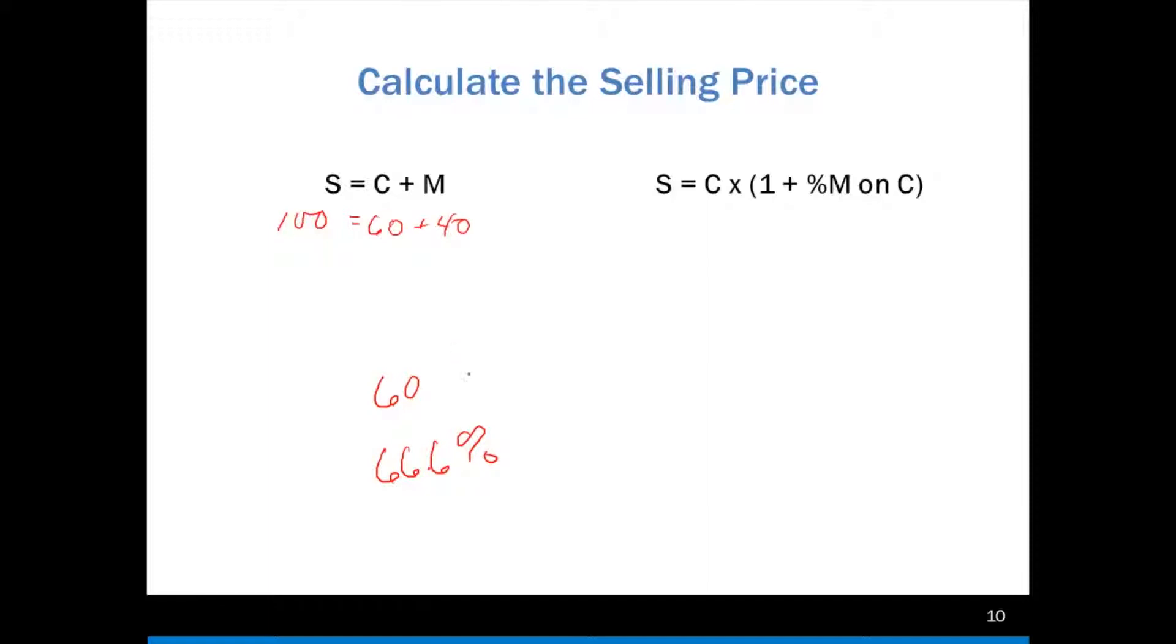In these videos, we've become accustomed to the fact that $100 was our selling price, our cost was $60, and our markup was $40. But we're not always presenting information in the way we want it. What if we know our cost is $60, and our percent markup on cost is 66.6%? Notice that's all the information I'm given, and I'm being told, what do I want for a selling price? This situation happens an awful lot.